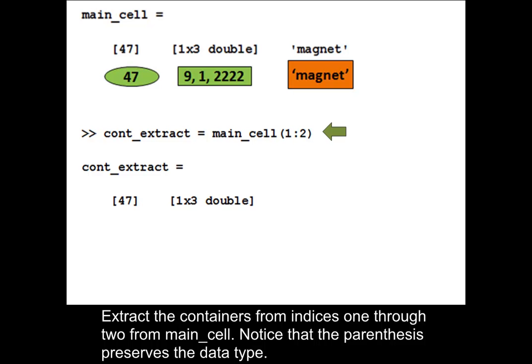Extract the containers from indices 1 through 2 from main_cell array. Notice that the parentheses preserves the data type.